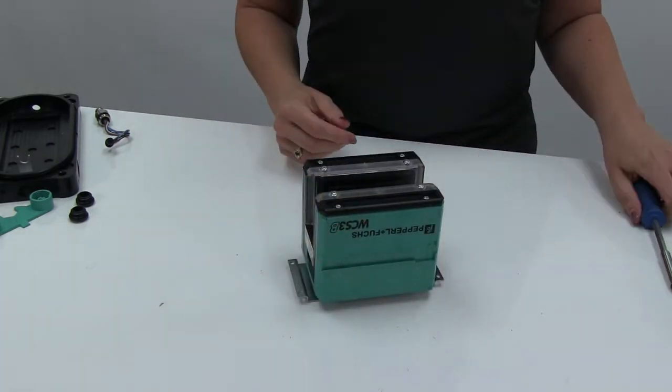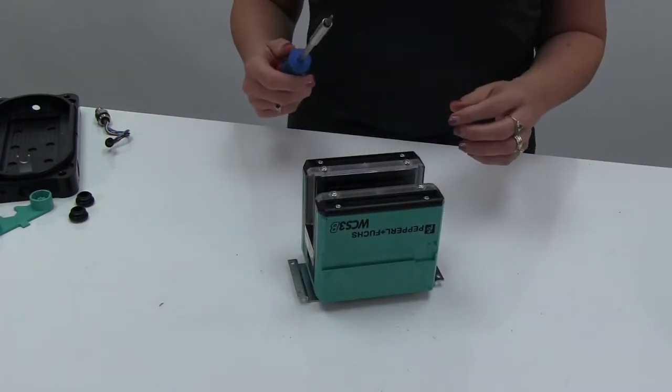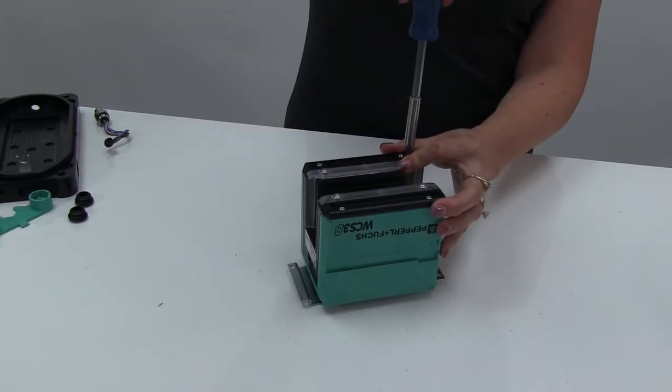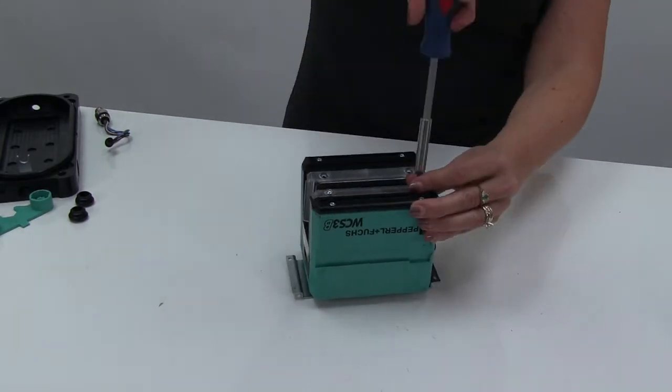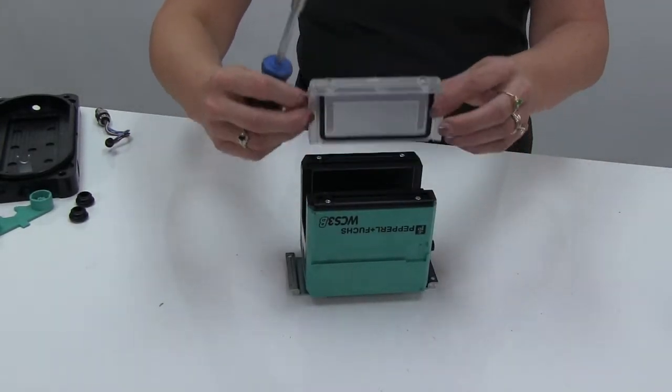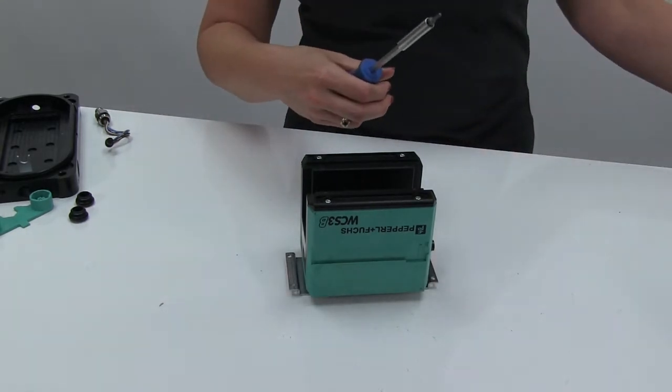The next step is to use the Torx 10 driver to remove the two lens covers. You can set those aside. You won't be needing them.